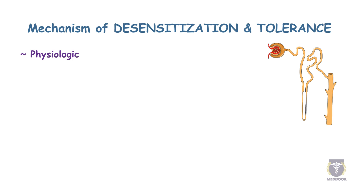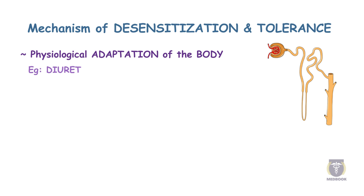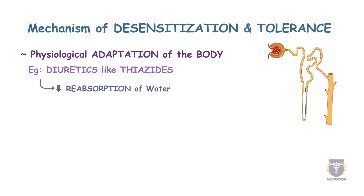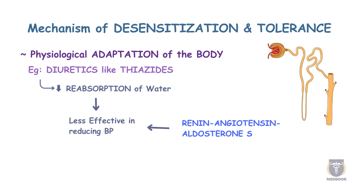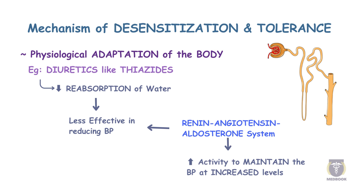Lastly, the effects of a medication may be limited because of a physiological adaptation of the body. For example, diuretics like thiazides, which decrease reabsorption of water, could gradually start getting less effective in lowering blood pressure as the renin-angiotensin-aldosterone system increases its activity to maintain blood pressure at high levels.